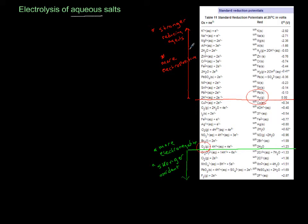One other thing you should realize: as you go above this chart you become a stronger reducing agent, you are more electropositive, much more reactive cation or metal. As you go down the chart you become a stronger oxidant or oxidizing agent and you're also more electronegative.